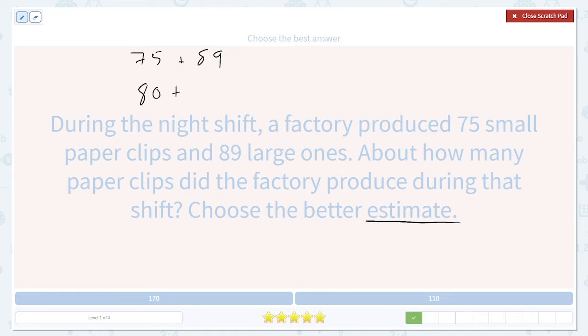89 because nine is more than five rounds up to 90. For a total of 170 paperclips. Approximately, not the exact right answer, but it's close enough. So our estimate is going to be 170.